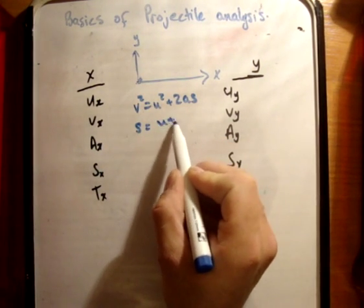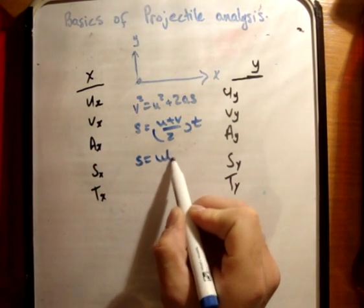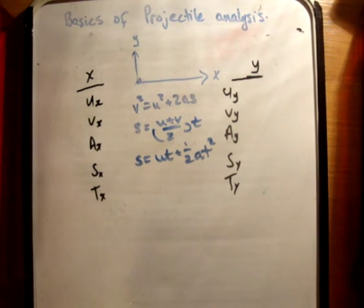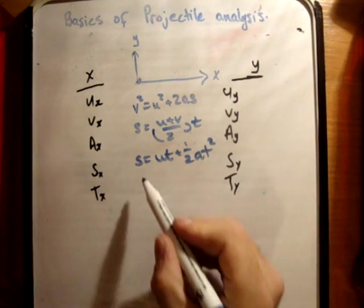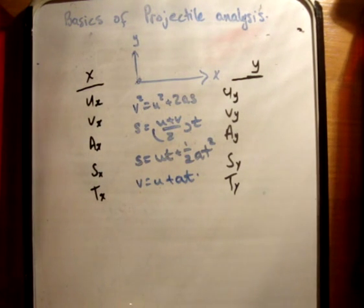So, we had V squared is equal to U squared plus 2AS, S is equal to U plus V over 2 times T, S is equal to UT plus half AT squared, and V is equal to U plus AT. They are the formula that we used.